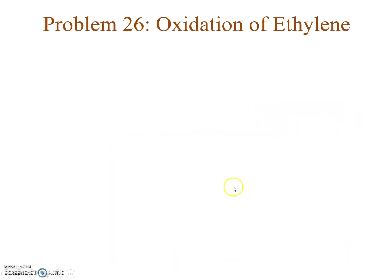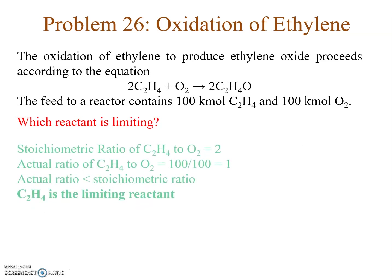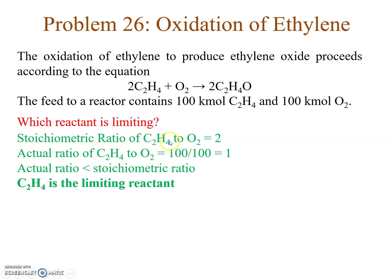Now I will take a problem on the oxidation of ethylene. The feed to a reactor contains 100 kilo moles each of ethylene and oxygen. First question: which reactant is limiting? The stoichiometric ratio of ethylene to oxygen is 2:1. The actual ratio is 100/100 = 1, which is less than 2. So ethylene is present in less than its stoichiometric proportion, making ethylene the limiting reactant and oxygen the excess reactant.